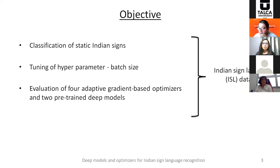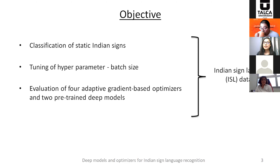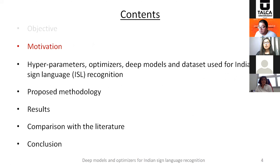The first objective is the classification of static Indian signs — I have used only static signs. The second is the tuning of the hyperparameter batch size. The third is the evaluation of four adaptive gradient-based optimizers and two pre-trained deep models. All three have been done on an Indian Sign Language dataset taken from literature.